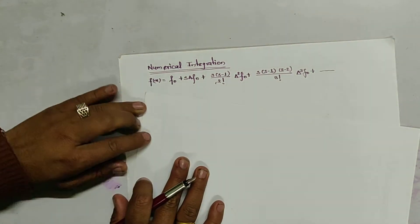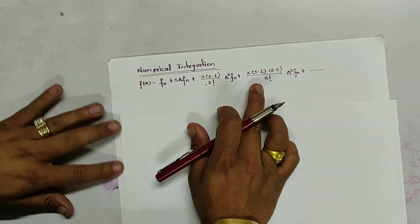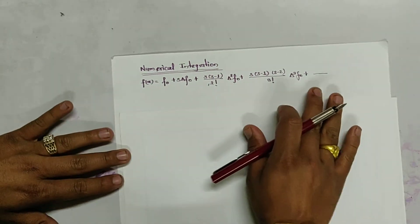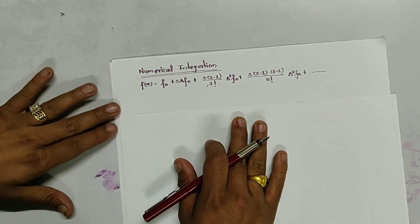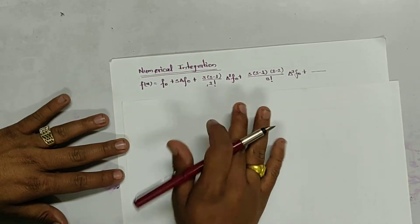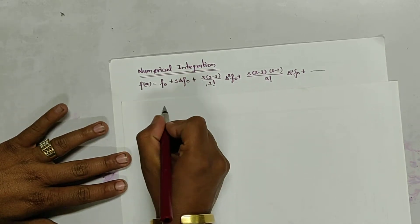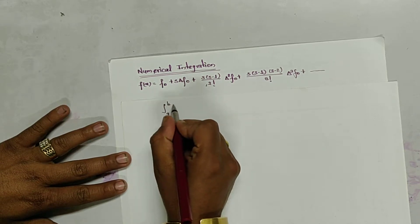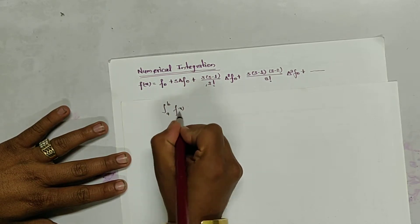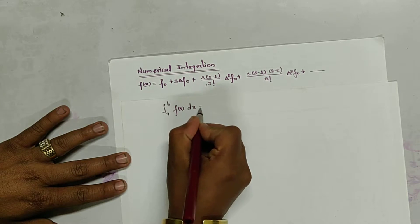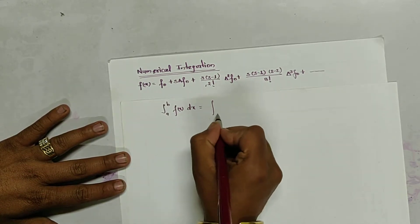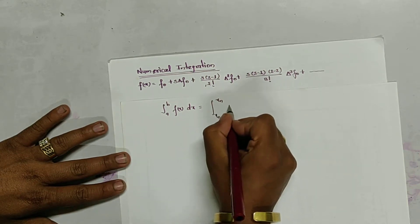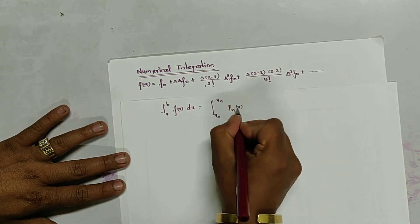We use this Newton forward interpolating polynomial to generate the formula for calculating integration. So let we have to calculate the integration of f(x) from a to b, represented as x0 to xn of Pn(x) dx.